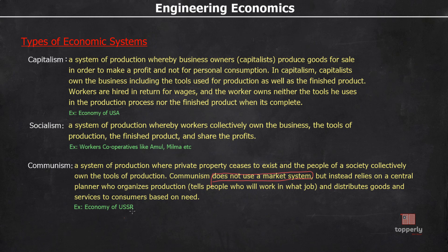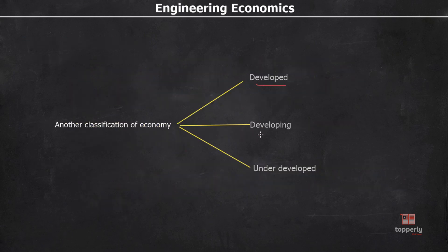Another classification of economies is based on whether they are developed, developing or underdeveloped. Countries are classified based on their industrial base, human development index and many other parameters. An example of a developed country is the USA; developing countries include India and Brazil; and underdeveloped countries include most African countries like Kenya and Nigeria.